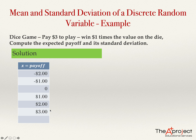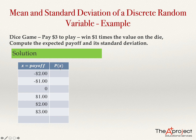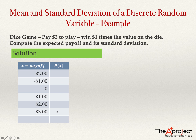The probability distribution also needs to list the probability of each value. Each payoff value corresponds one-to-one with exactly one outcome when you toss a die, so the probability of minus two is the probability of obtaining one on the die, which is one-sixth. Similarly, the probability of each payoff value is one-sixth, which equals approximately 0.1667.